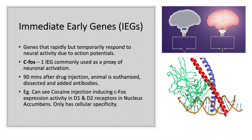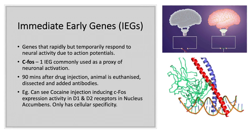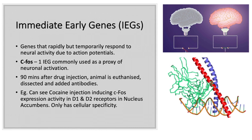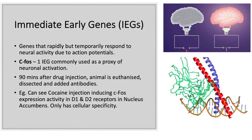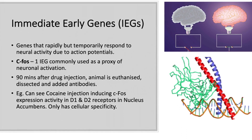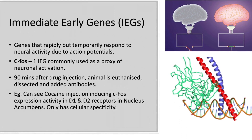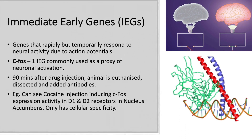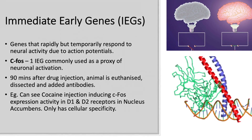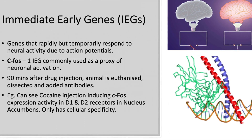There are immediate early genes, or IEGs. These genes rapidly but temporarily respond to neural activity due to action potentials. cFos is one type of IEG and it is commonly used as a proxy of neuronal activation. In 90 minutes after drug injection, animals are euthanized and dissected and antibodies are added. Through this, we can see the effects of cocaine induced on cFos — expression activity in the D1 and D2 receptors in the nucleus accumbens.